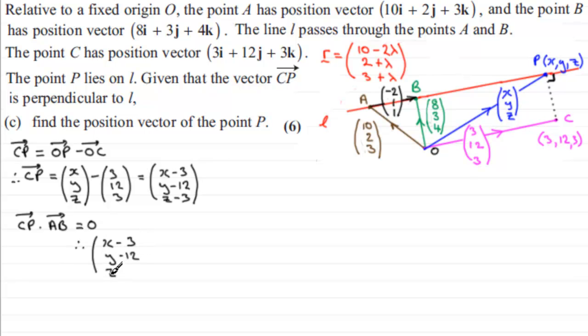And then, minus O to C. O to C as a column vector is 3, 12, 3. So, we've got subtract 3, 12, 3. What's that going to give us? It's going to be X minus 3 in the I direction, Y minus 12 in the J direction, and Z minus 3 in the K direction. So, here's our column vector for C to P.